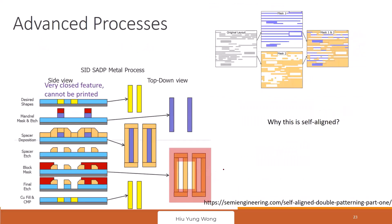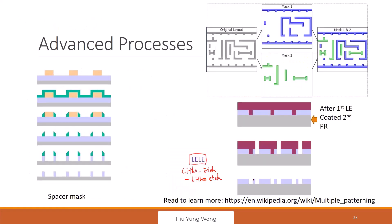For example, I want to pattern this six trench. I cannot put them in the same mask because I cannot print them at the same time. This is impossible because they are too close to each other optically. So what do you do? You actually create two masks. You use mask one first to pattern here. This is pattern already. And then you call in the second mask, and then you pattern using the second mask.